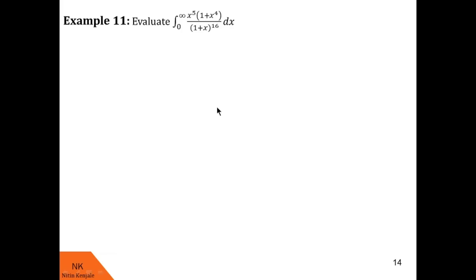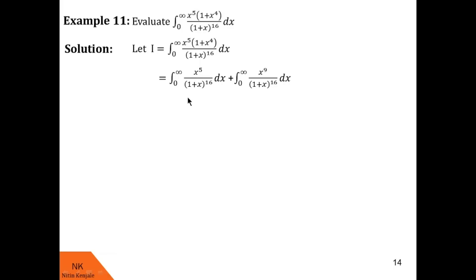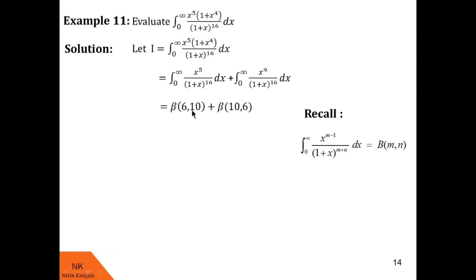Here we evaluate the integral of x⁵(1 + x⁴) / (1 + x^16) dx from 0 to infinity. Labeling it I, we split the numerator over the denominator. Using the third form of the beta function, the first part gives beta(6, 10) and the second gives beta(10, 6). Since beta(m,n) = beta(n,m), these are equal and the answer is 2 · beta(6, 10).